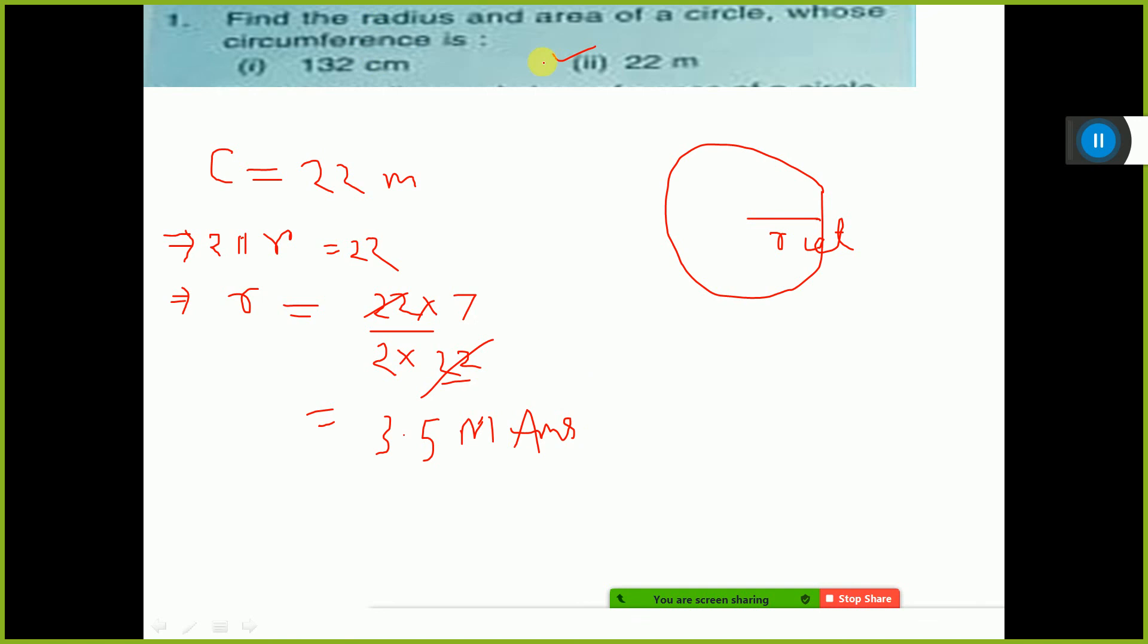What do you have to find? Radius and area. Then area formula. What is the formula? πr².